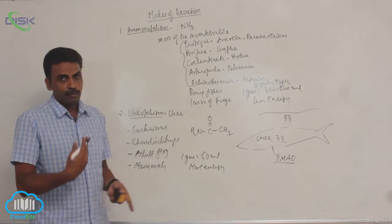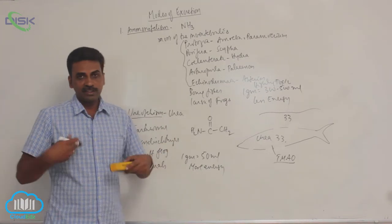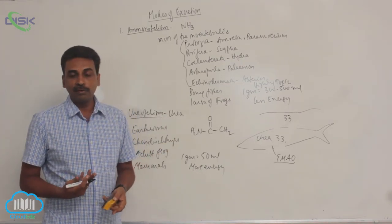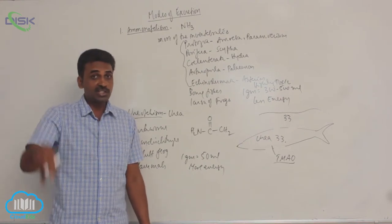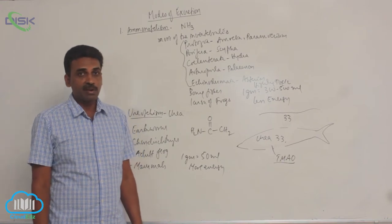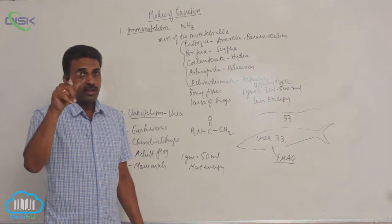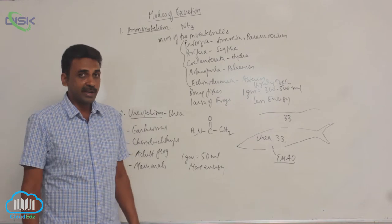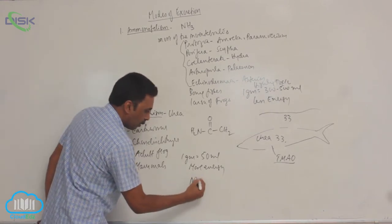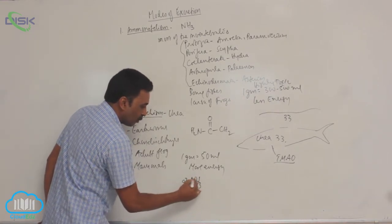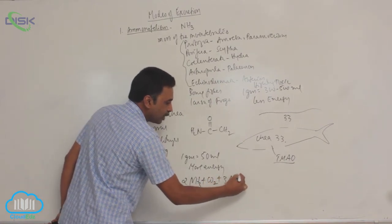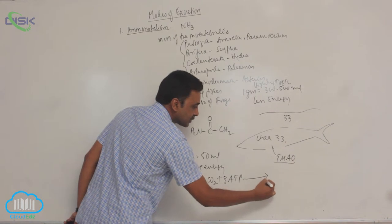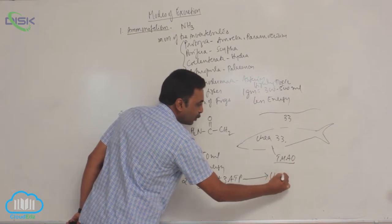In humans, the first formed nitrogen waste is ammonia inside the liver, formed by deamination of proteins or amino acids. The ammonia then combines with carbon dioxide. Two ammonia combined with one carbon dioxide, and three ATP molecules are utilized to produce one urea molecule.